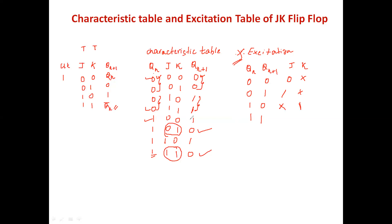For Q(n)=1 and Q(n+1)=1: K is fixed at 0, and J varies — once it is 0 and once it is 1 — so J=don't care, K=0. This completes the excitation table for the JK flip-flop. You get the next state as 0 when J=0 irrespective of K, and next state as 1 when J=1 irrespective of K. Thank you.